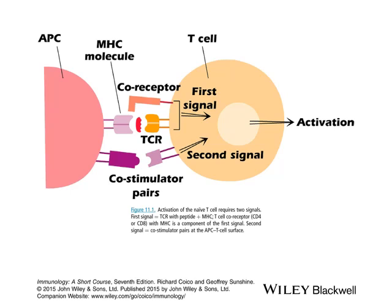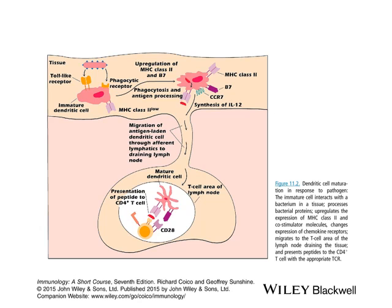Once the T cell gets activated, it will perform an immune response — also called an effector response. One of the things you want T cells to do is proliferate, to fight infection. Another thing is to release cytokines. The third thing is to develop into different subsets. So there are many things that T cells would do when you get the first signal and become activated.